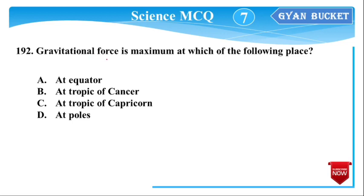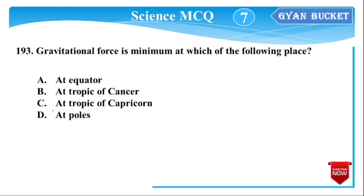Next question: Gravitational force is maximum at which of the following places? Gravitational force is maximum at the poles and minimum at the equator, because the Earth's radius is smallest at the poles.